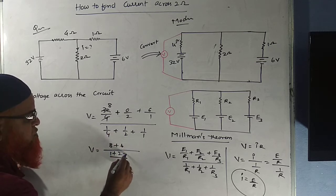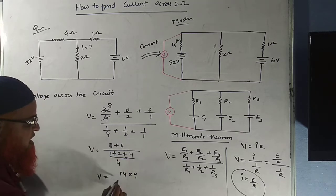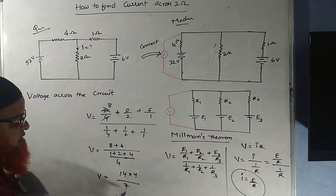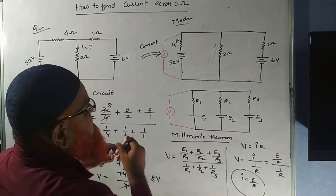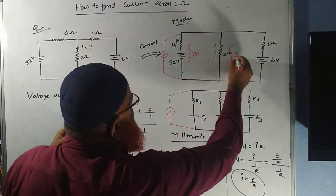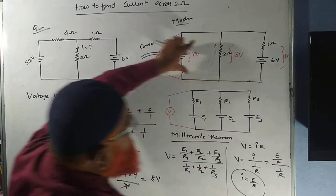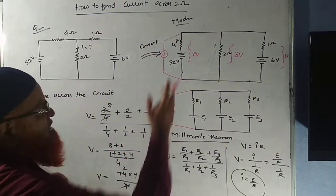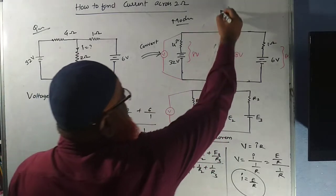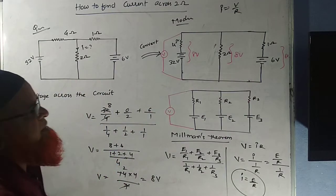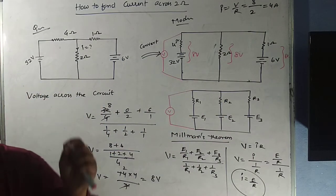Taking the LCM of the denominator as 4: that gives 1, 2, and 4, so the denominator is 7. So voltage equals 14 divided by 7, which is 8 volts. The voltage across this circuit is 8 volts — here also 8 volts, here also 8 volts. If the voltages are the same, it is easy to find the current. I equals V/R: V is 8 and R is 2, so the answer is 4 amperes.